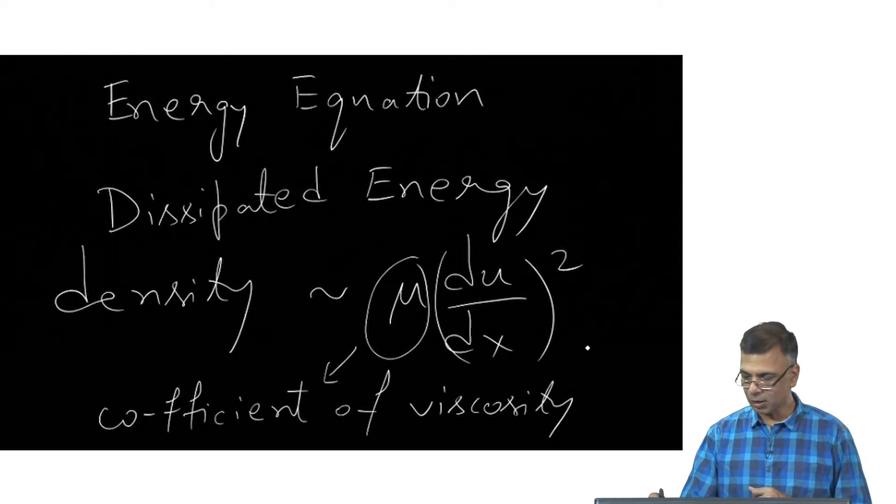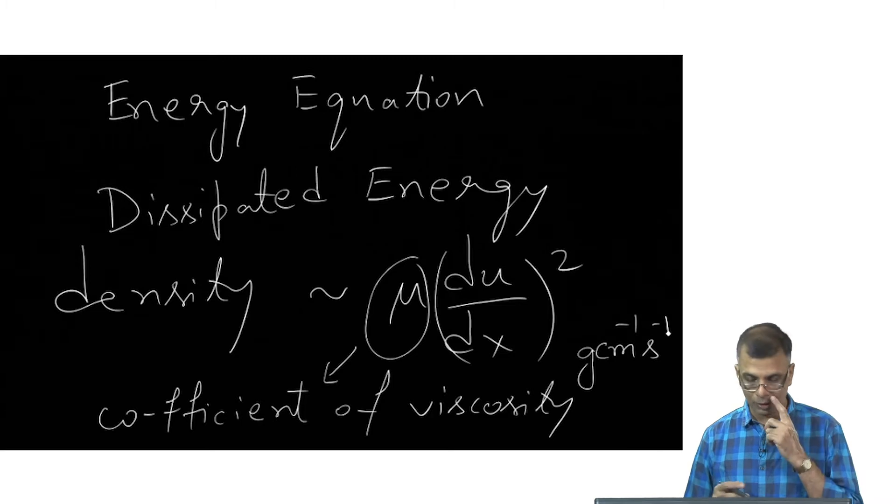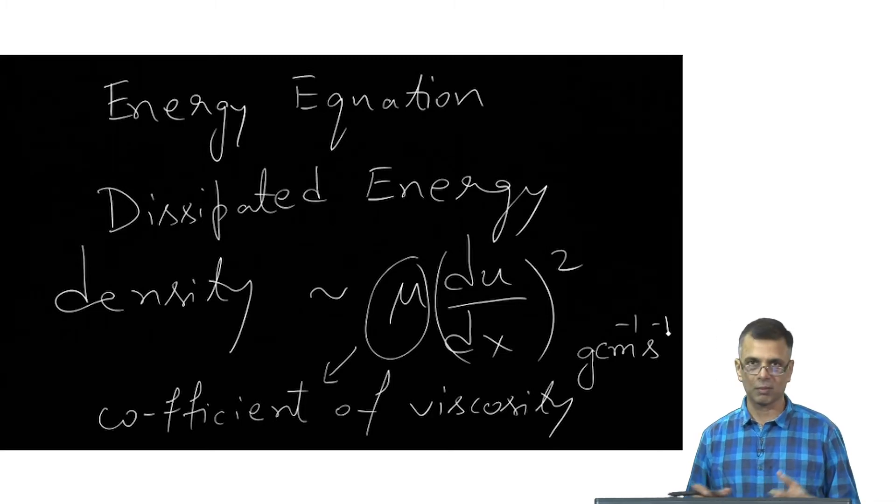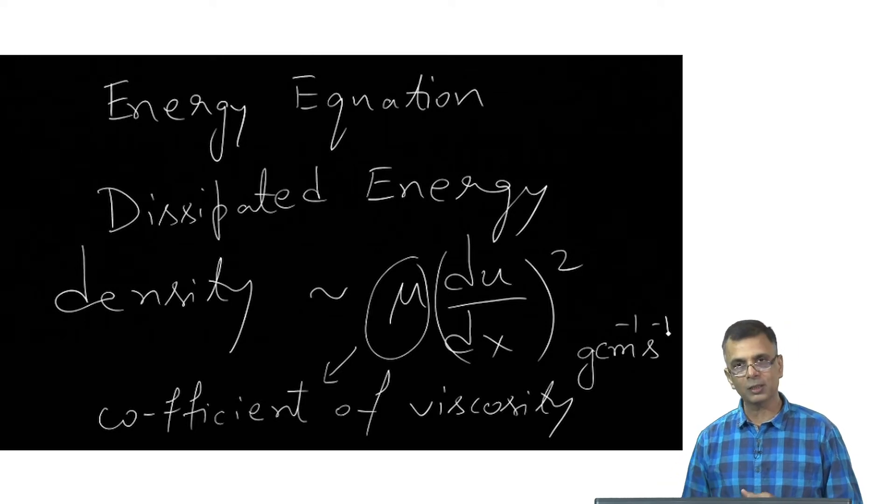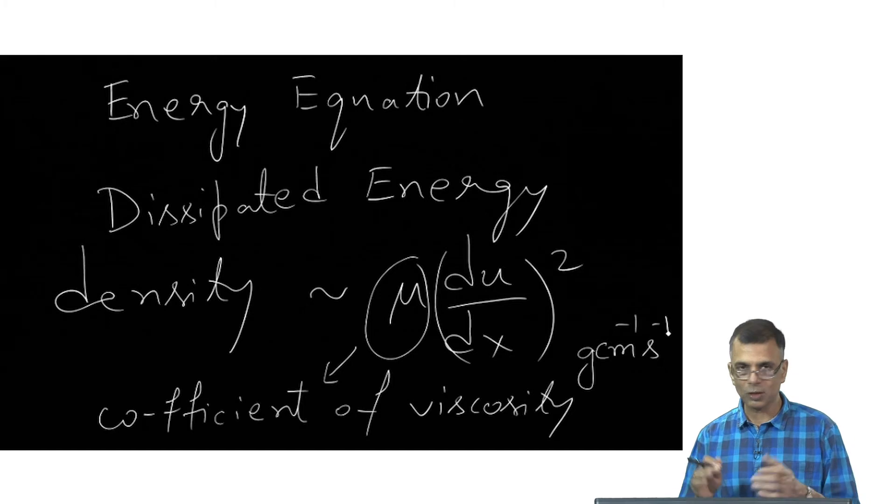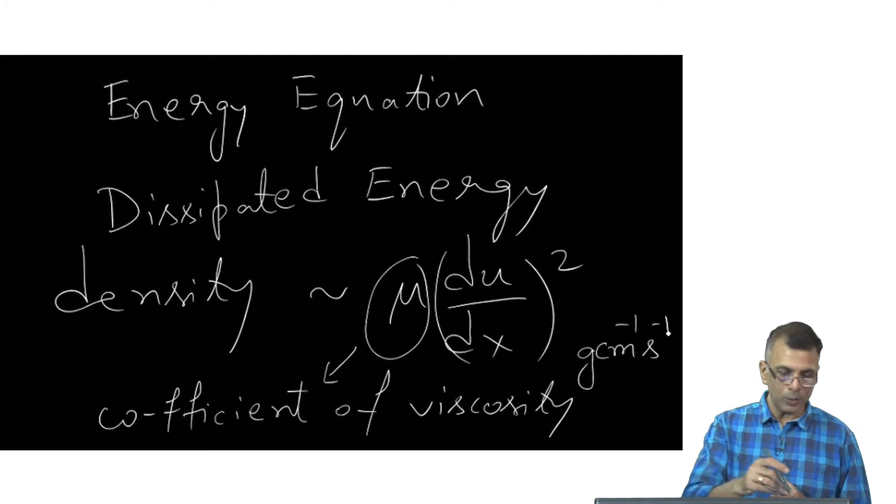The dimensions of which are grams per centimeter second. Sometimes they call this coefficient of dynamic viscosity and keeping the dimensions in mind is very useful. This was the main focus of what we did last time and what we will do today is maybe write down...